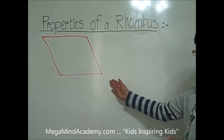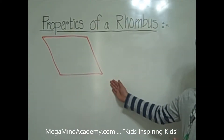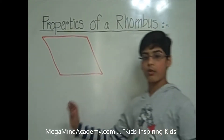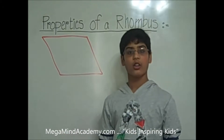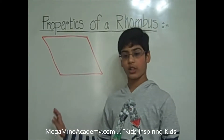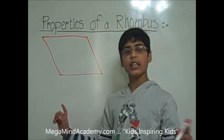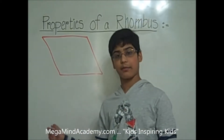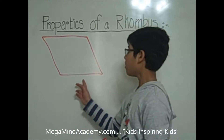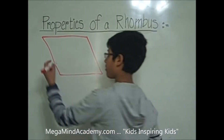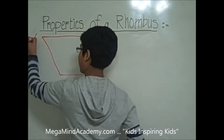Let's say this is our rhombus — it is a quadrilateral with four equal sides. Let's first name this rhombus.